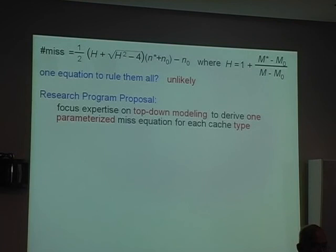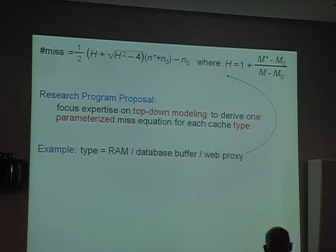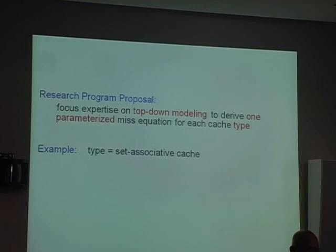I have enough data to give me optimism that this particular approach is feasible. I propose that instead of the 40-year-old strategy of bottom-up analysis, let's do it top-down. For every cache type — whether it's database buffer, processor cache, or whatever — let's derive just one equation for each level of the memory hierarchy. That's the program. In the cases of RAM, database buffer, and web proxy, I've shown that this particular equation works.